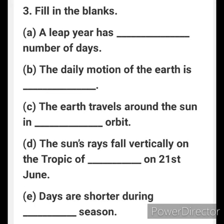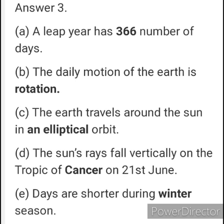Fill in the blanks. Questions and answers: A leap year has 366 number of days. The daily motion of the Earth is rotation. The Earth travels around the Sun in an elliptical orbit. The Sun's rays fall vertically on the Tropic of Cancer on 21st June. Days are shorter during the winter season.